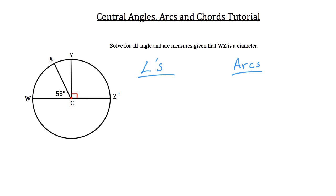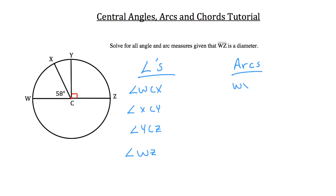I see four angles here, which is going to give us four arcs. We've got angle W, C, X, we've got angle X, C, Y, angle Y, C, Z, and angle W, C, Z. And then we have the corresponding arcs: arc W, X — and I'm just going to write the arc that corresponds to that angle that was originally drawn.